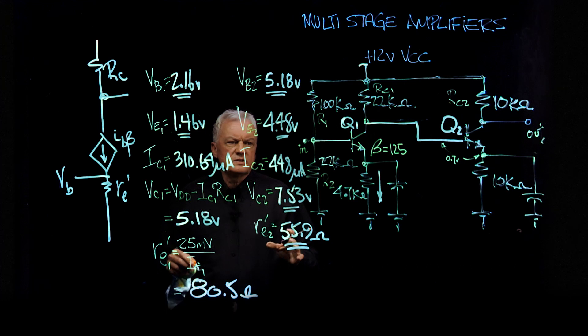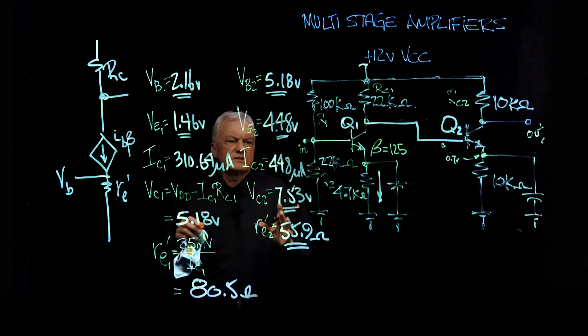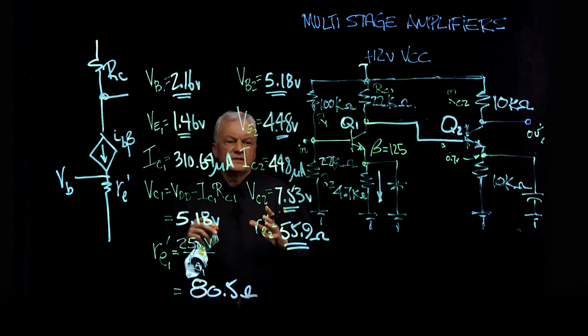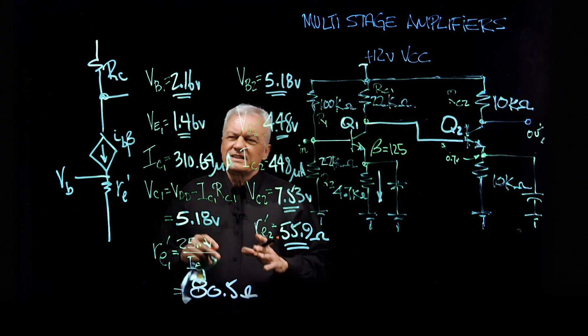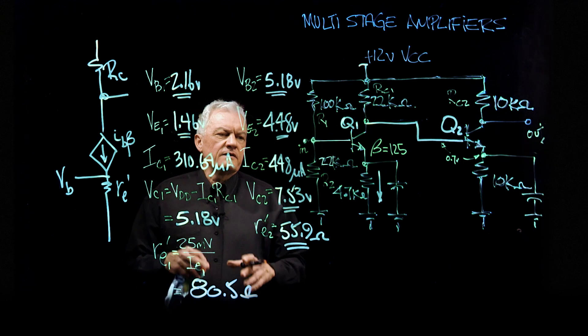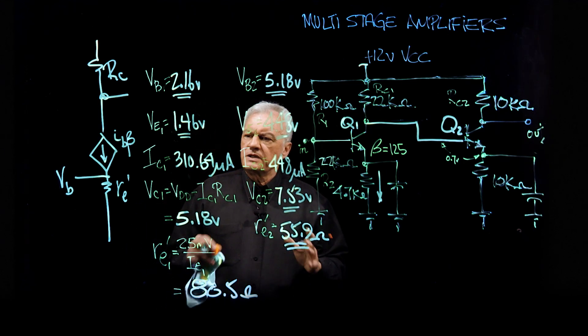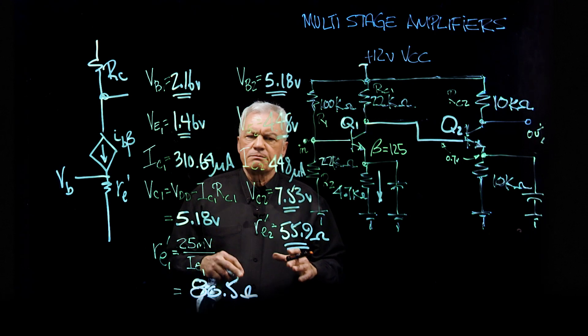And then what we're going to do is we're going to take that number, dimensionless number, it's just a multiplier, and we're going to turn it into a decibel. And a decibel is a tenth of a bell, and it's 20 log to the base 10 of that number will be equal to how many decibels of gain we have. So let me clean this board, and we'll get back to it in a second.